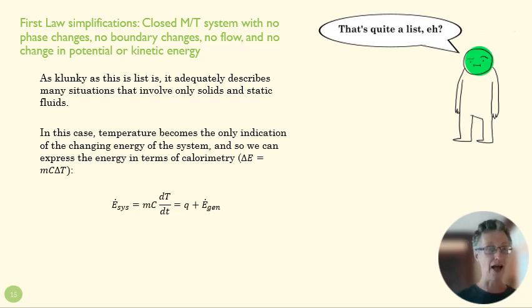To this guy down here where the Ė of our system, the change in energy of the system, is only about the temperature of the system. So this is our calorimetry equation that describes how energy is related to the change in temperature. Temperature becomes the only variable over here—presumably mass stays the same and our specific heat is going to be mostly constant—and then that's going to be equal to whatever is flowing into or out of that system and whatever energy is being generated in that system.